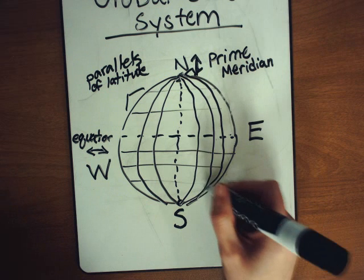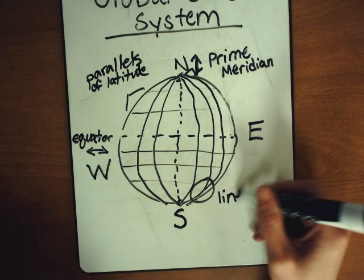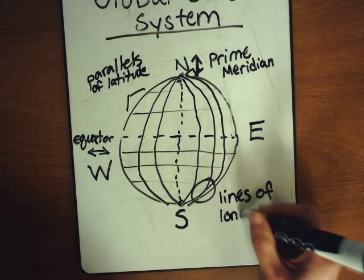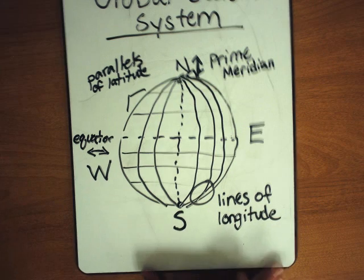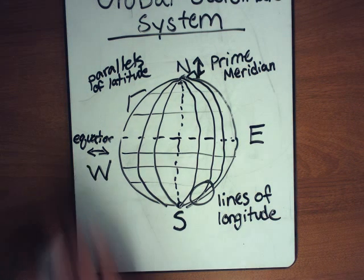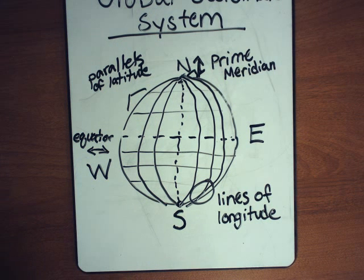So you've got lines of longitude. Go ahead and label that. Okay, so go ahead and pause right here if you need more time to finish out your drawing and do your labeling because we're going to move on to how to use this coordinate system to find some different parts on the globe.